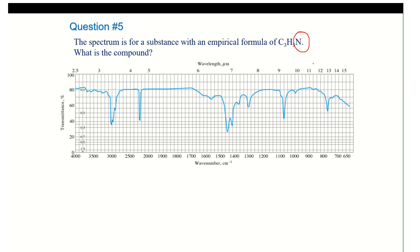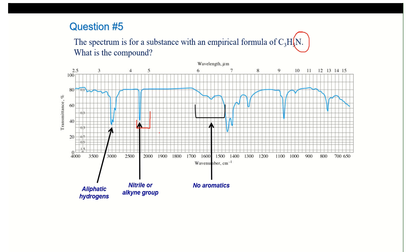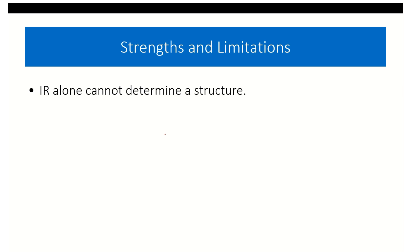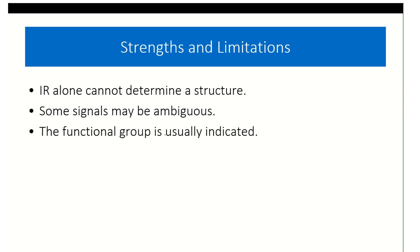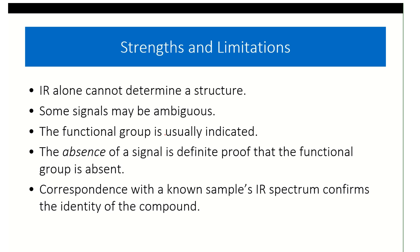If we have nitrogen and see a stretch in the triple-bonded region, we immediately know we have a nitrile, and we can draw various species associated with it. However, we cannot determine the full structure from IR alone — we can elucidate some functional groups, but some signals are ambiguous, and the absence of a signal is proof that the functional group is absent.